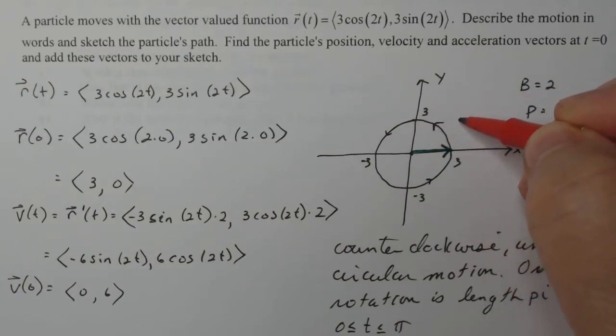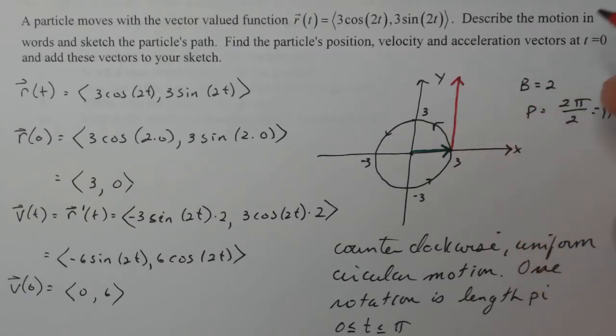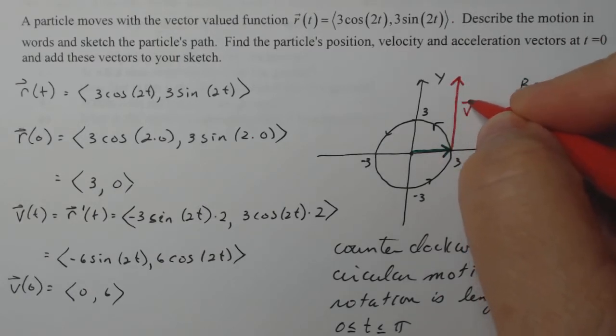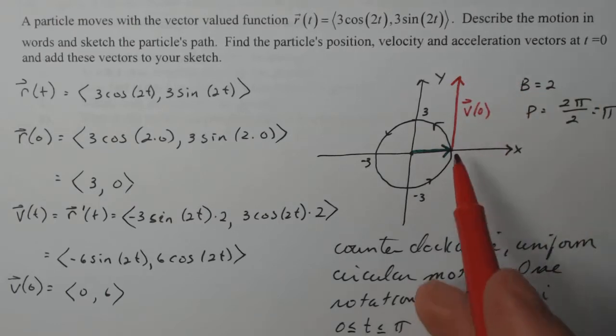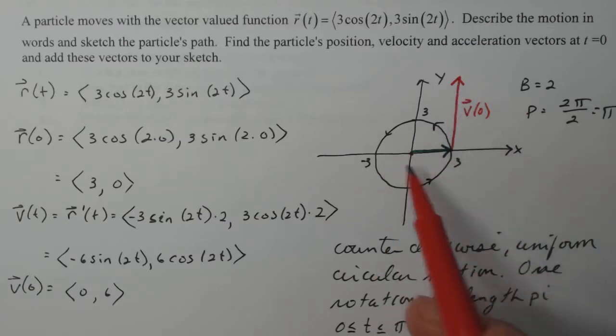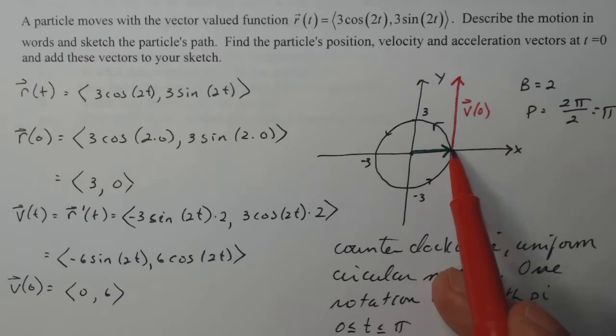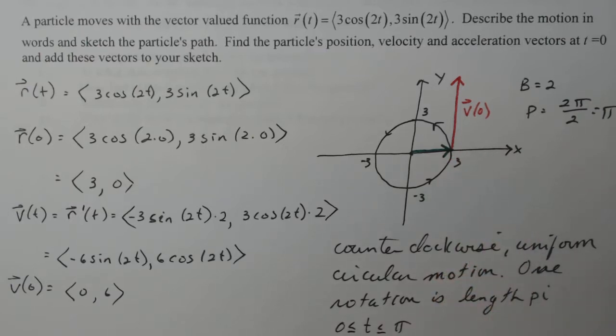So that means that if that's three, then six will be double that. And notice it should be a tangent vector, a vector tangent to the curve. If this is representing position at any time t, at that point the velocity vector should be tangent to the curve. This should be pointing to the point at which the particle's sitting at at time t equals zero.